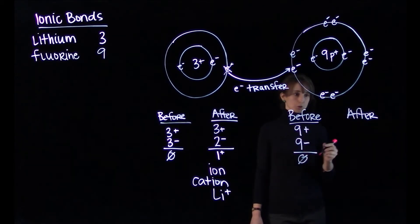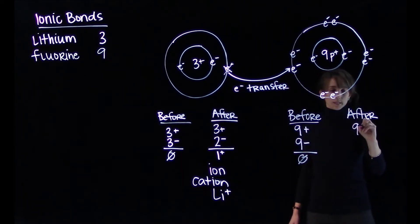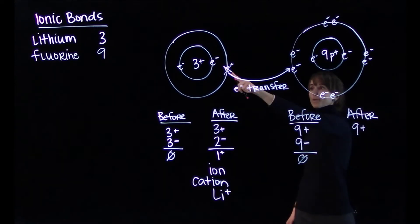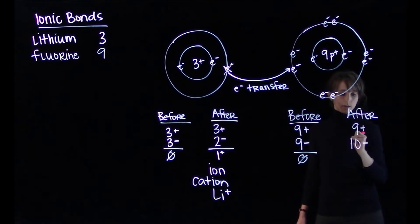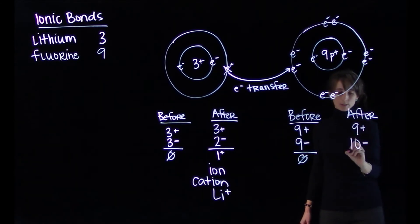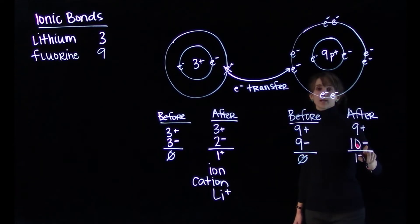So before we had nine positively charged protons and nine negatively charged electrons to give us a neutral fluorine atom. So after the transfer, the atom still has nine protons. With the addition of that electron from lithium, now we have 10 negatively charged electrons. So there's an imbalance of one negative charge.